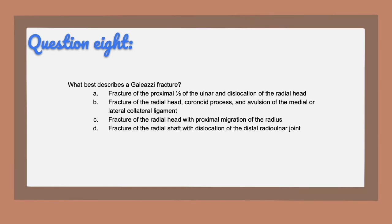Question eight, the answer is D — fracture of the radial shaft with dislocation of the distal radial-ulnar joint. This is a good opportunity to review fracture types: option A (fracture of the proximal third of the ulna with dislocation of the radial head) is a Monteggia fracture. Option B (fracture of the radial head, coronoid process, and avulsion of the medial or lateral collateral ligaments leading to dislocation) is a terrible triad. Option C (fracture of the radial head with proximal migration of the radius due to interosseous membrane rupture) is an Essex-Lopresti fracture.